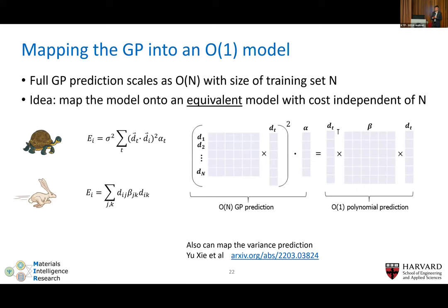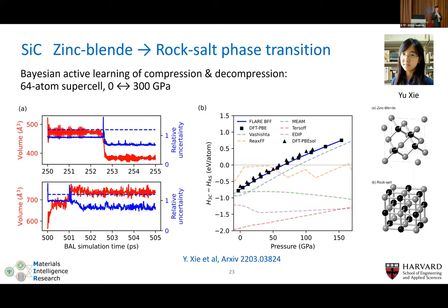Naively, GPR cost grows linearly with training set size since every new prediction must be compared against all training points. This can be bypassed with a trick specific to the dot-product kernel raised to the second power: you can reshuffle summation indices, pre-compute correlations between training set points, and reduce the prediction to a matrix-vector multiplication — essentially constant cost as a function of training set size. Once training is complete, you freeze the model and compute a matrix beta that gives a polynomial model in the descriptor. This is inspired by earlier work by Zeni and Caro in a different kernel structure.